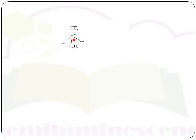Chiral carbon is also known as asymmetric carbon. It is chiral or asymmetric because four different groups are bonded to it. The chiral carbon is denoted by an asterisk placed on the chiral carbon. This is a representation of the chiral carbon atom. Now let's see its mirror image.